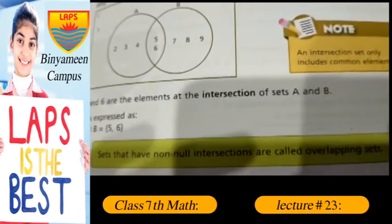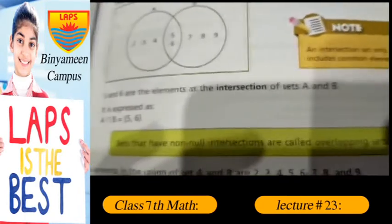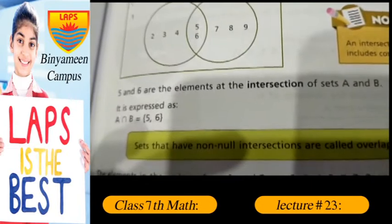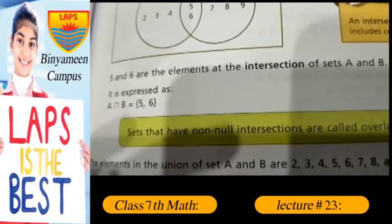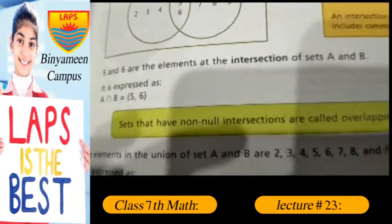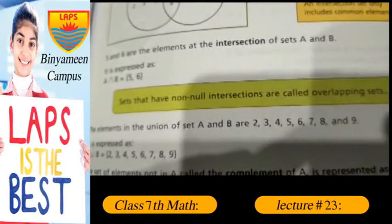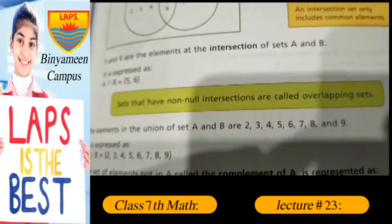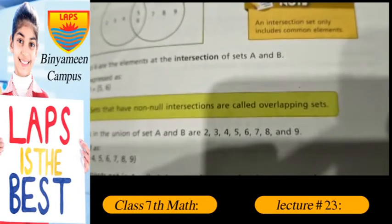5 and 6 are the elements at the intersection of set A and B. It is expressed as A intersection B is equal to 5, 6. The sets that have non-null intersection are called overlapping sets.